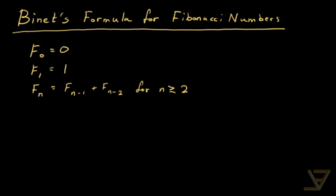Hi everyone. Let's talk about Binet's formula for the Fibonacci numbers. Recall that the Fibonacci numbers are defined this way: f(0) is equal to 0, f(1) is equal to 1, and for integers n greater than or equal to 2, f(n) is equal to f(n−1) plus f(n−2). So each Fibonacci number after the first one — after f(1) — is the sum of the previous two Fibonacci numbers.